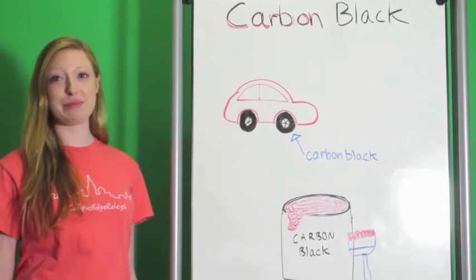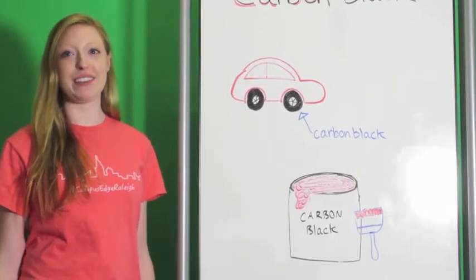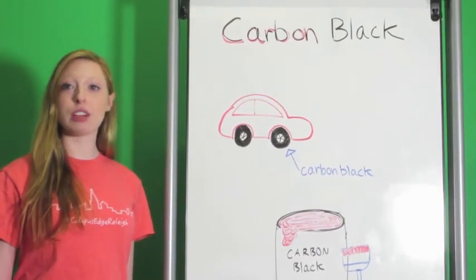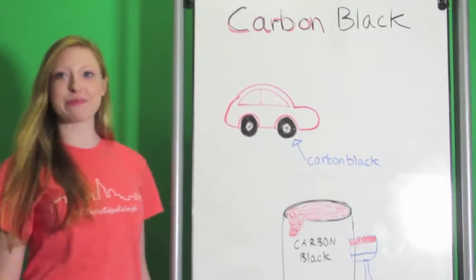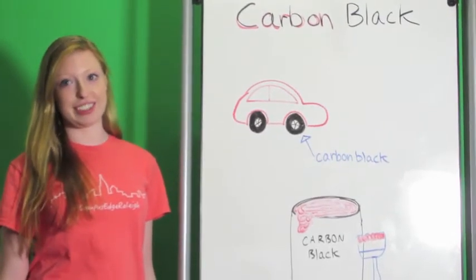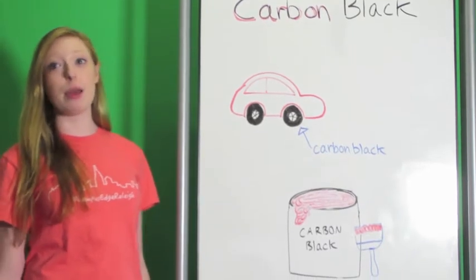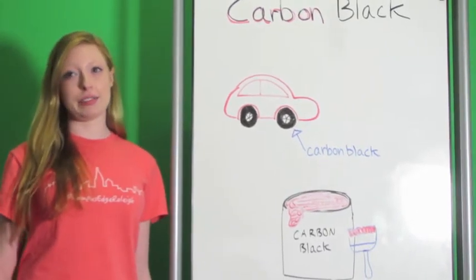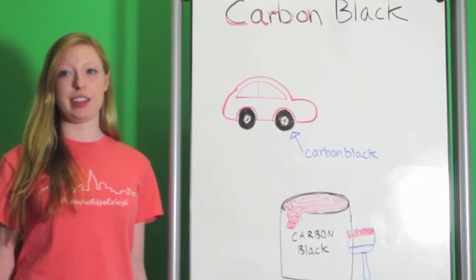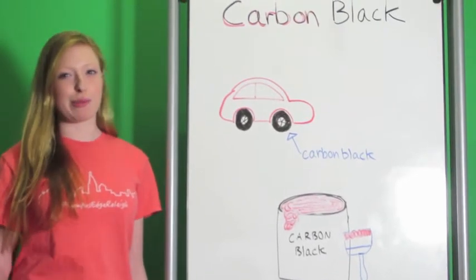Carbon black is a material produced from the incomplete combustion of heavy petroleum. It is most commonly used in your car tires. It is also used as UV protection, so make sure you lather on some carbon black before you hit the beach this summer. But be aware that it is classified as a group 2B carcinogen, so maybe not too much carbon black sunscreen.